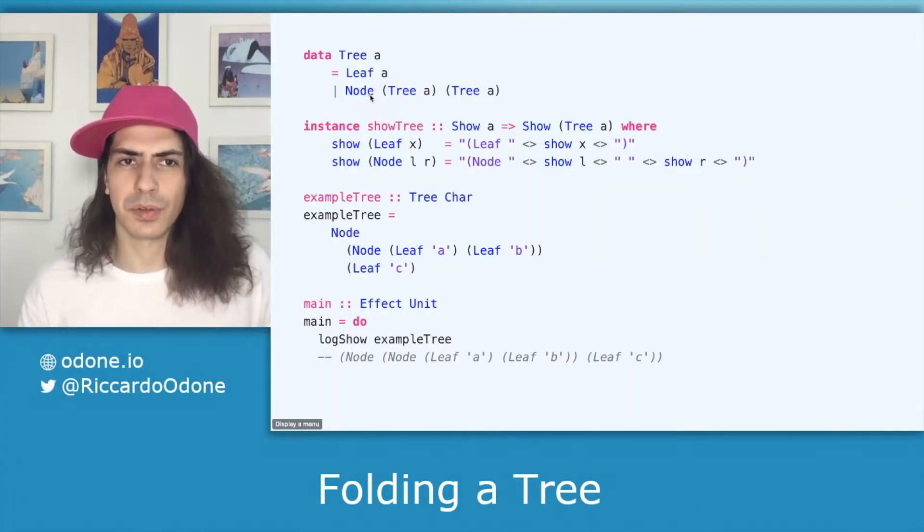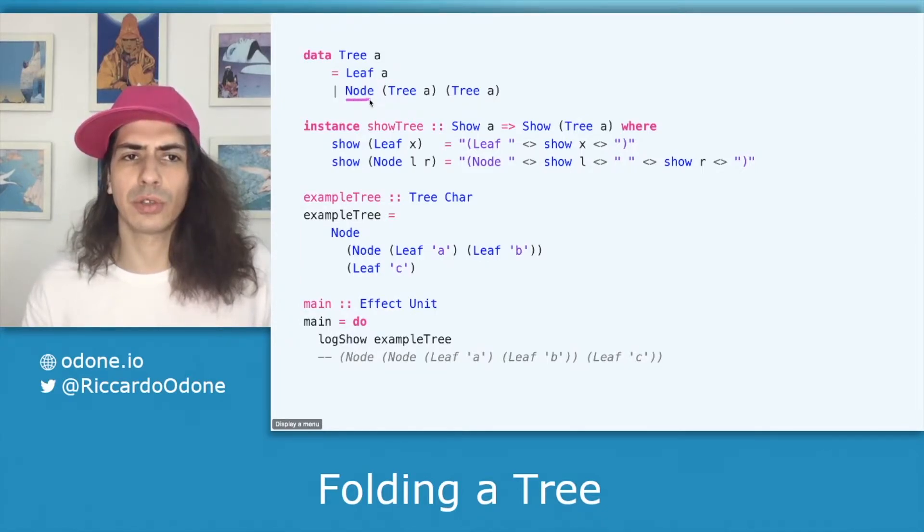Okay, let's start with the data type. We have our tree type which can either be constructed as a leaf wrapping a value or a node which has two trees. So this is a binary tree.